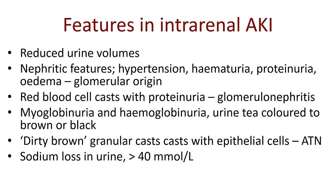Pre-renal hypoperfusion can lead to acute tubular necrosis — death of the cells lining the nephrons. These cells slough off the basement membrane, clogging the nephrons and resulting in intrarenal AKI. As they are expelled, they retain the shape of the tubule in which they formed — these are often called dirty brown granular casts, made up of epithelial cells, and are a characteristic feature of acute tubular necrosis.